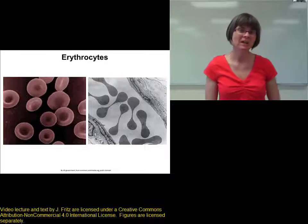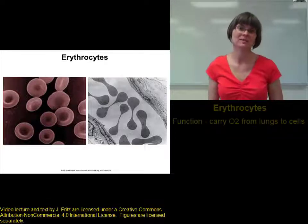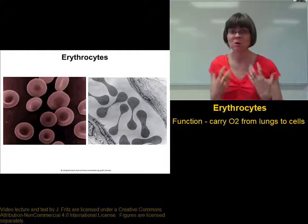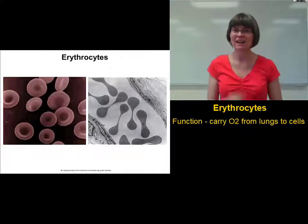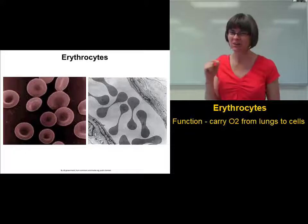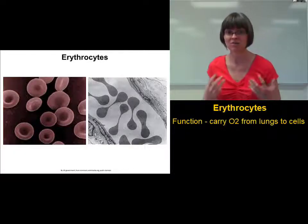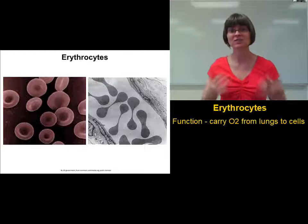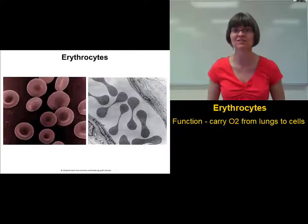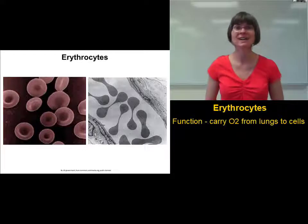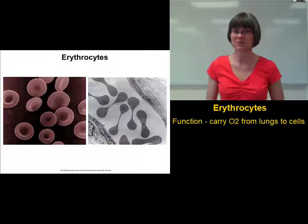We're going to spend a lot of time talking about erythrocytes, mainly because of how important they are. They carry most of the oxygen around your body. A small amount of oxygen can dissolve into the plasma, but over 98% of your body's oxygen is carried by your erythrocytes. So without erythrocytes, your cells don't get oxygen, and they die, and you die.